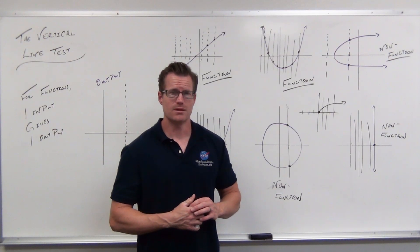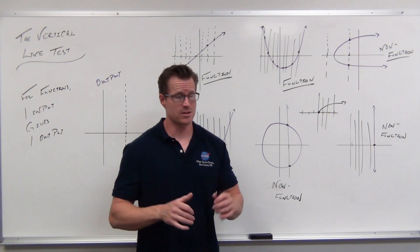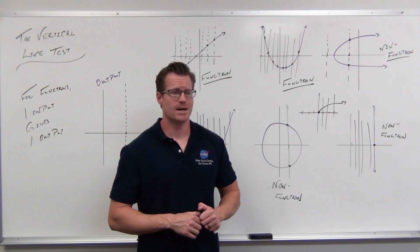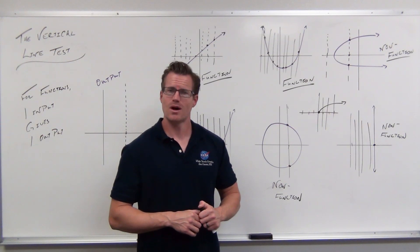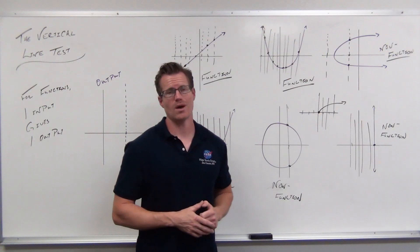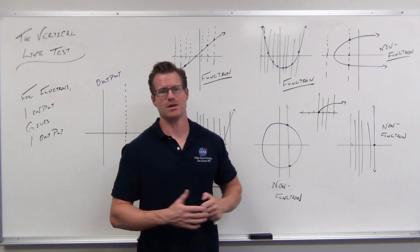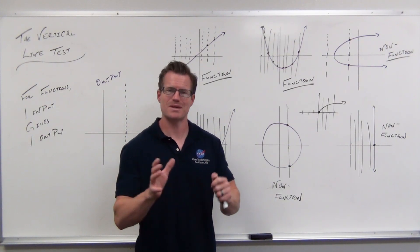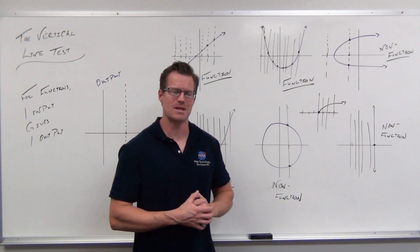I hope it makes sense. I hope you're seeing the interplay between inputs and outputs on the vertical line test — that we're checking inputs, which is a horizontal idea, and looking above and below for an output. If it has outputs, there can only be one. I will see you for the next video.